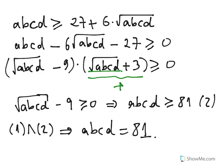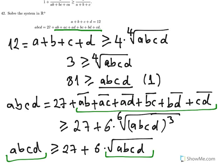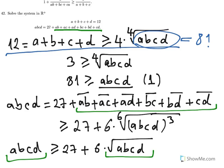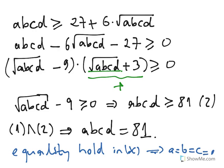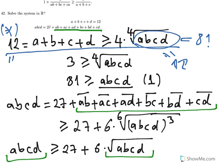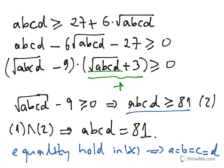Now, if we return back to the first inequality (star) that we applied, if ABCD equals 81, then the fourth root of 81 is 3, and four times 3 is 12 — so equality holds in that inequality. Equality holds in the AM-GM inequality, which means all the terms are equal to each other: A equals B, A equals C, A equals D. Their product is 81 and their sum is 12, so all of them are equal to 3.